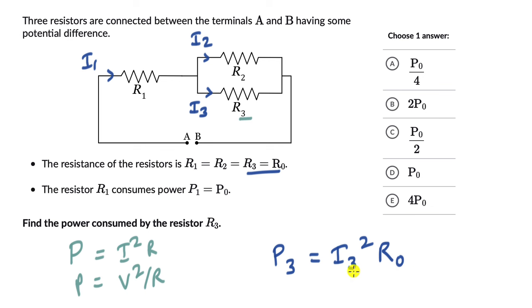Now we don't really know what I3 is. So let's try to think how can we figure out I3. What can we see in the circuit? Well we can see that these two resistances they are the same. R2 is equal to R3.